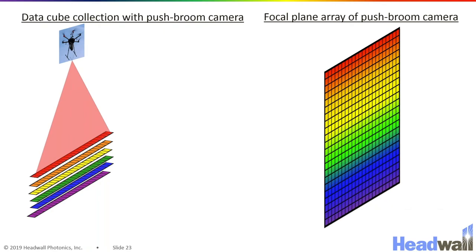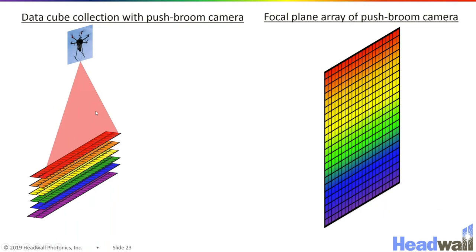So if I animate that — here I've moved the focal plane to be in the same orientation as shown on the left. And as the drone moves one spatial pixel, I will gather another frame from the focal plane, which in this dimension is giving me spatial information.